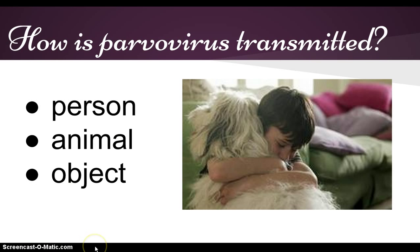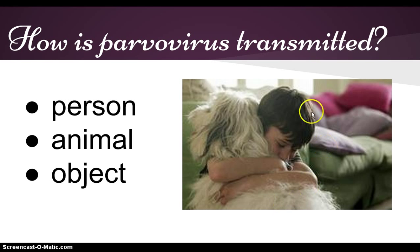How is parvovirus transmitted? Parvovirus is extremely contagious and can be transmitted by any person, animal, or object that comes in contact with infected feces. The virus can live in the environment for months and may survive on inanimate objects such as food bowls, shoes, clothes, etc. Parvovirus is highly resistant.